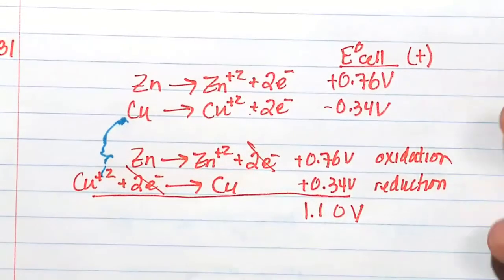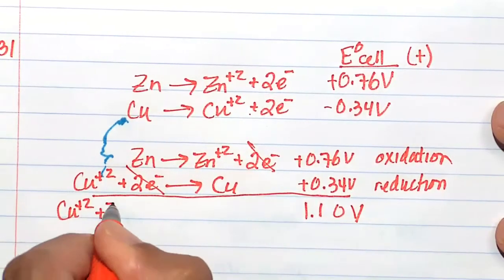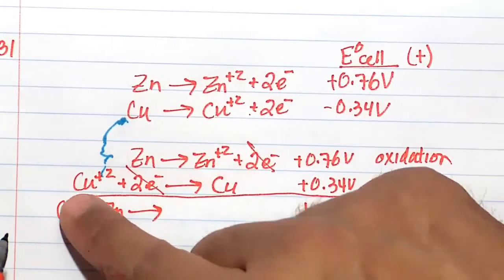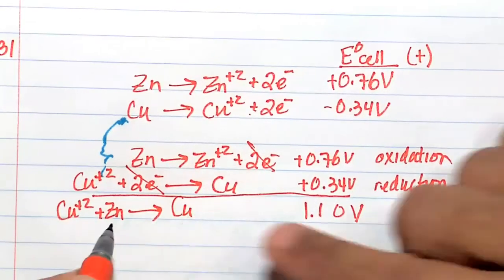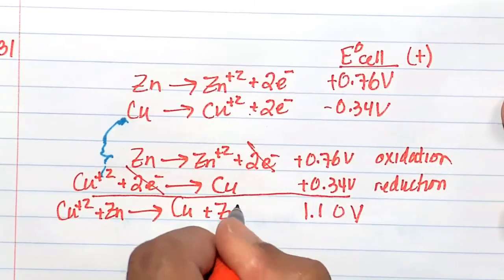We add this up together and get 1.10 volts. That's a successful battery. We have copper plus two plus zinc. The copper plus two is going to copper solid. The zinc is going to zinc plus two.